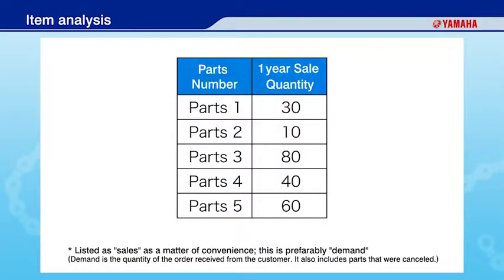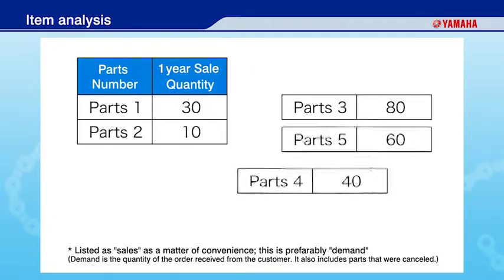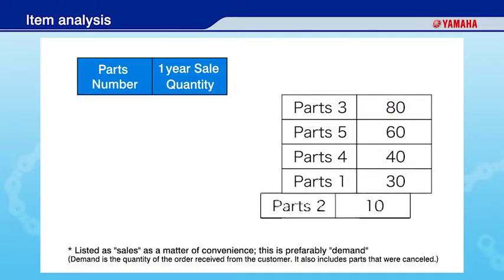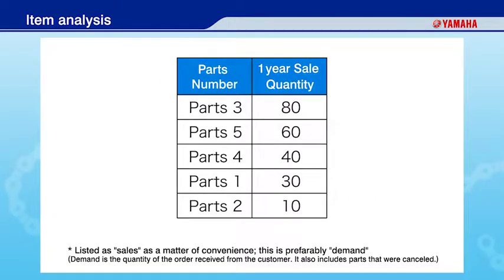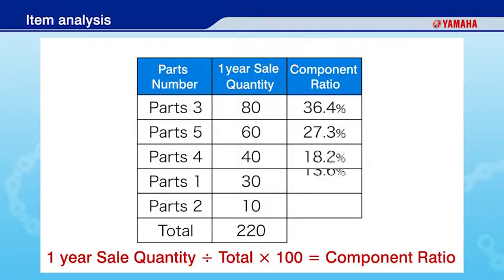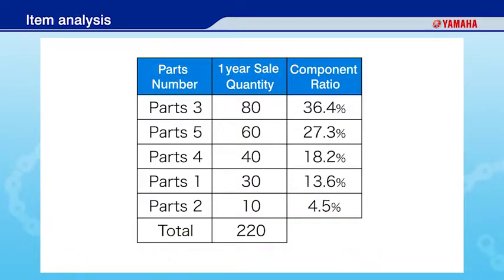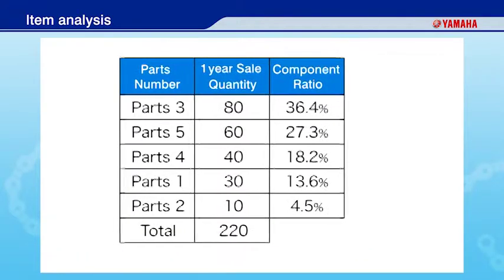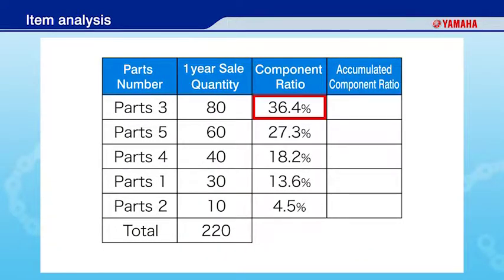First, sort parts in order of highest demand. Next, calculate total sales volume. Then, calculate the total sales ratio of each part. Next, calculate the cumulative component ratio of each part.